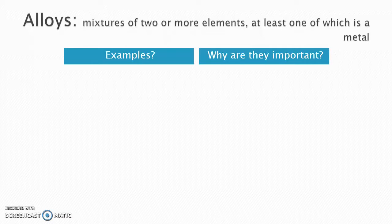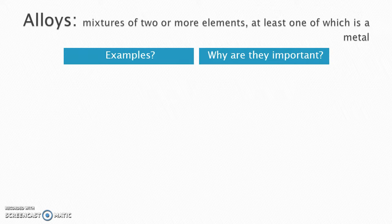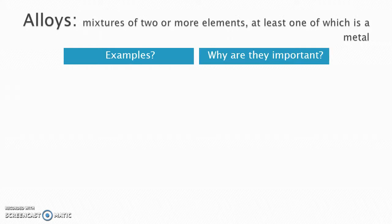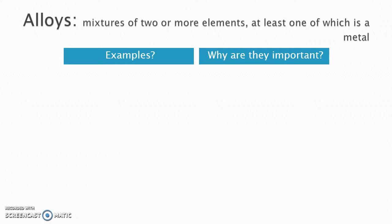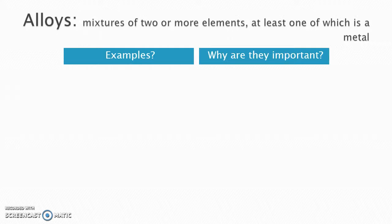So one other type of substance that also has metallic bonding in it - obviously most commonly we see metals that are just by themselves. Any metal you see on the periodic table: gold, silver, zinc, iron - whenever they're by themselves they always have metallic bonding. Another common type of substance is actually a mixture, so not a compound but a mixture of two or more elements called an alloy.